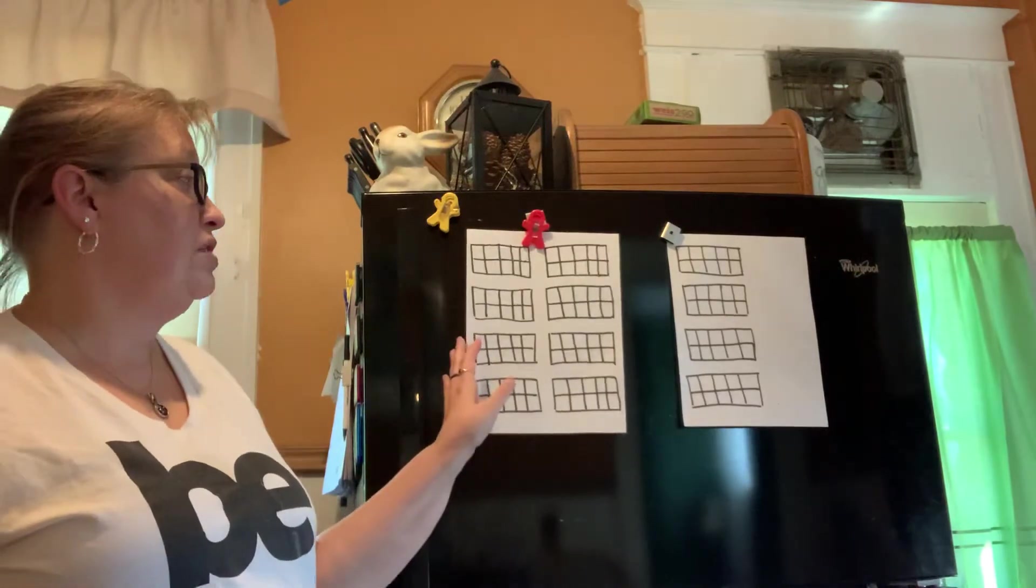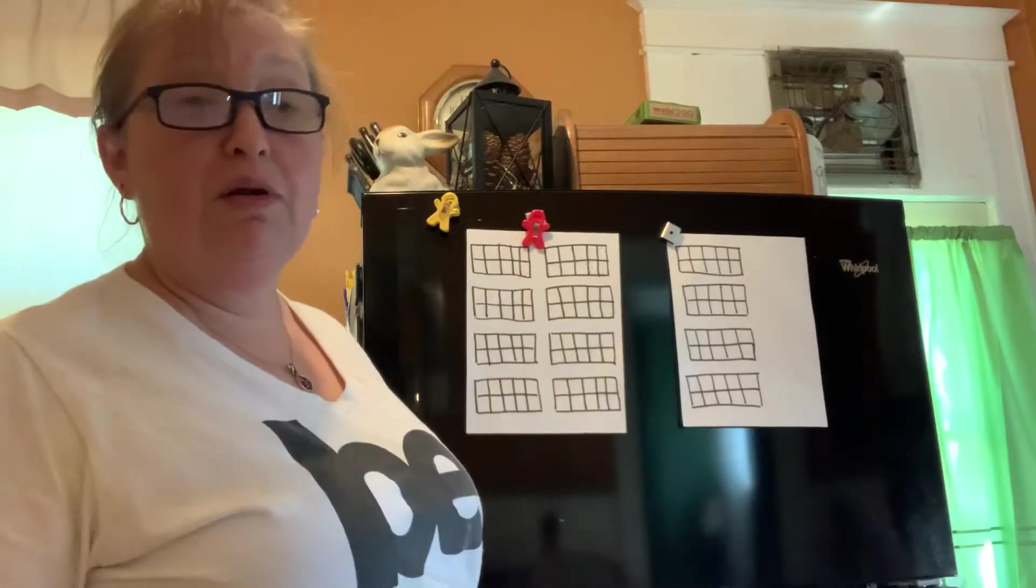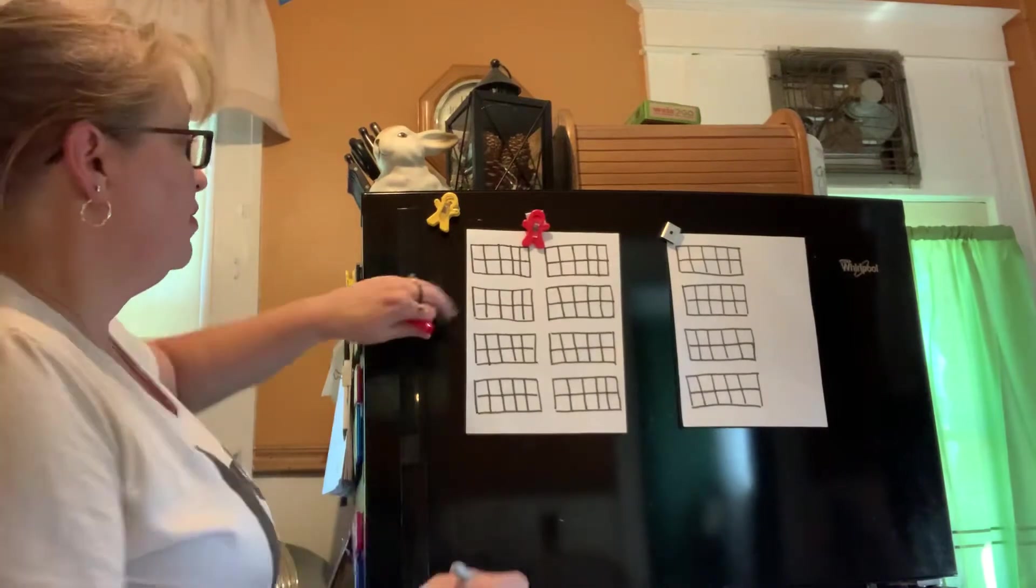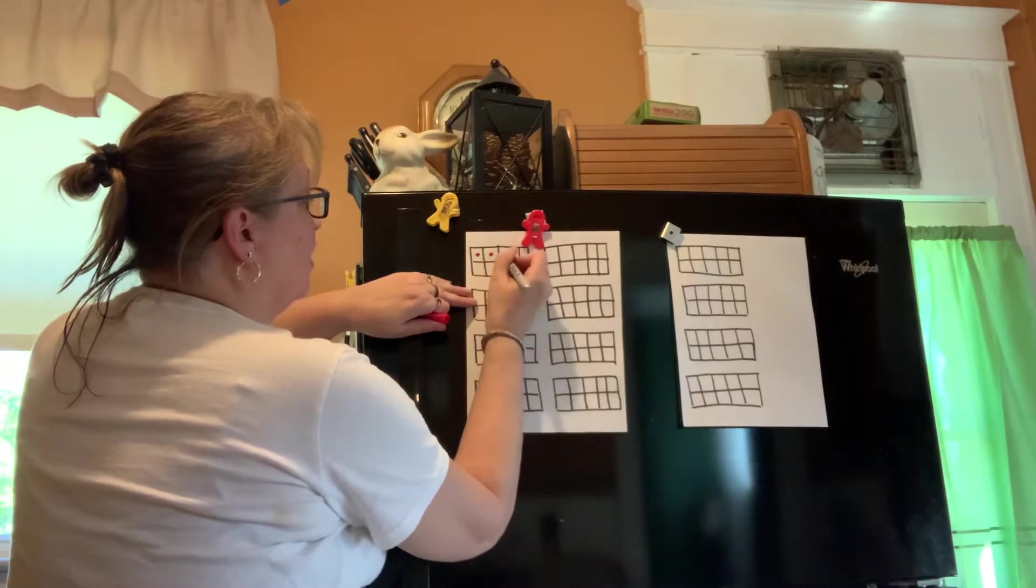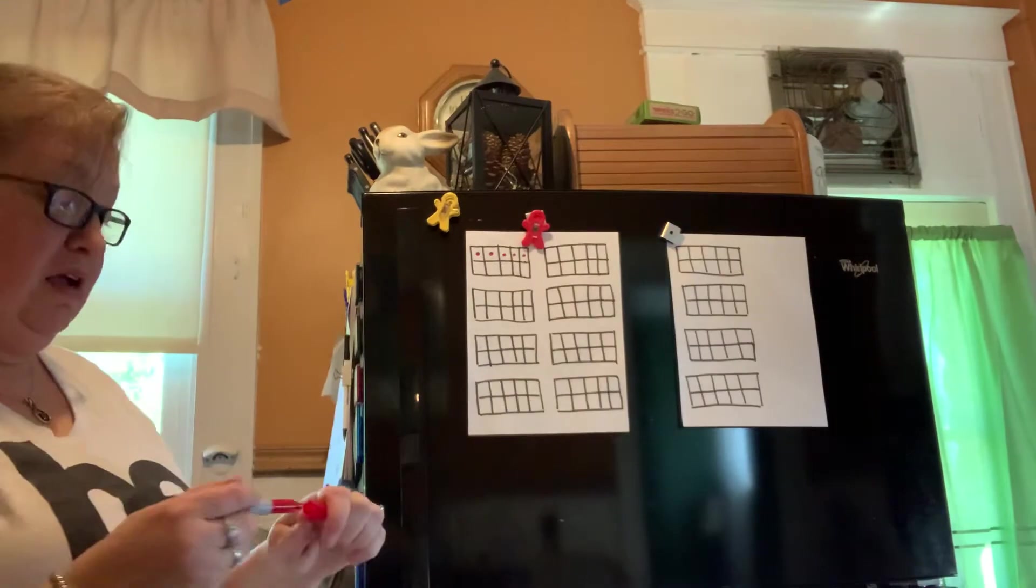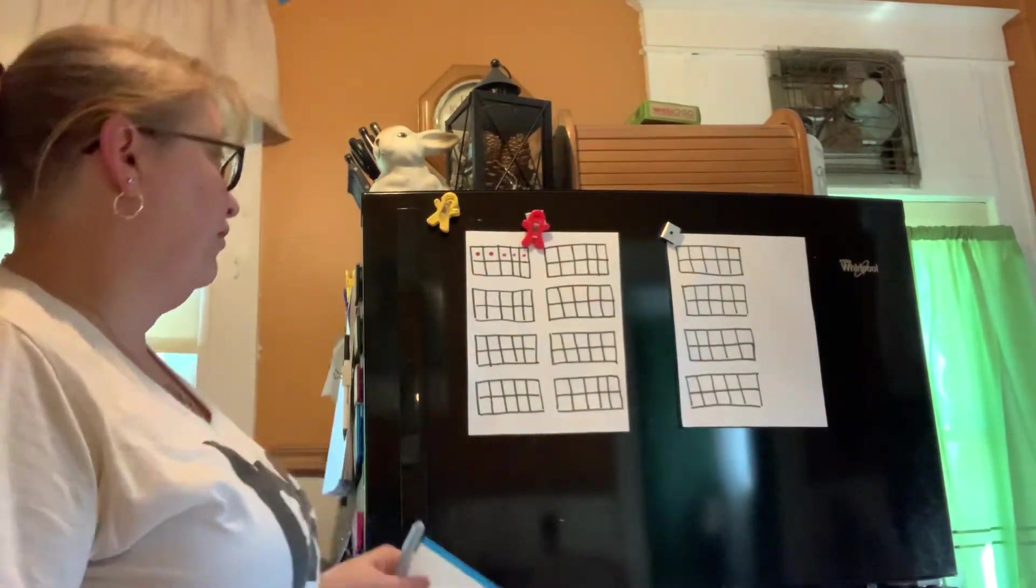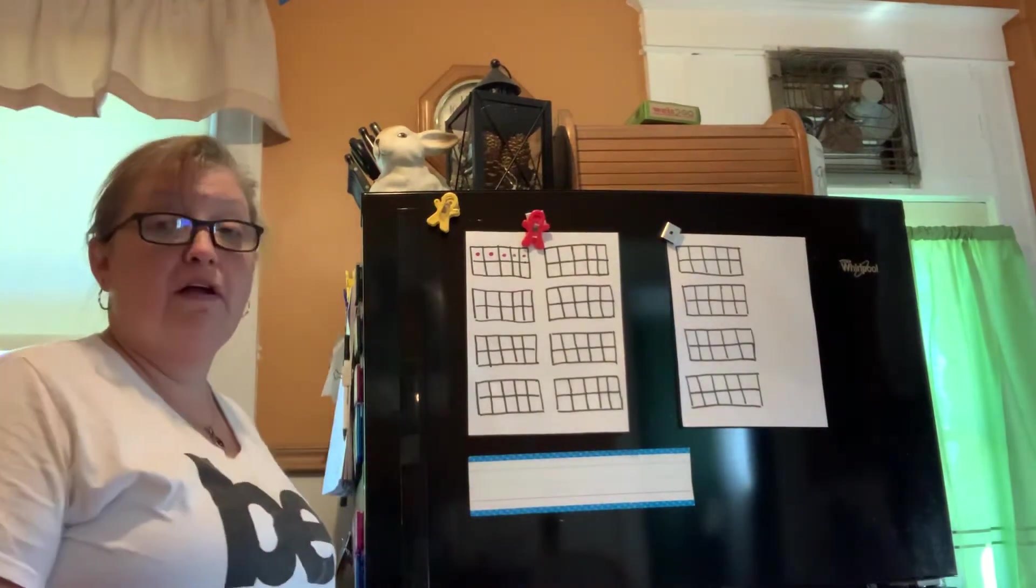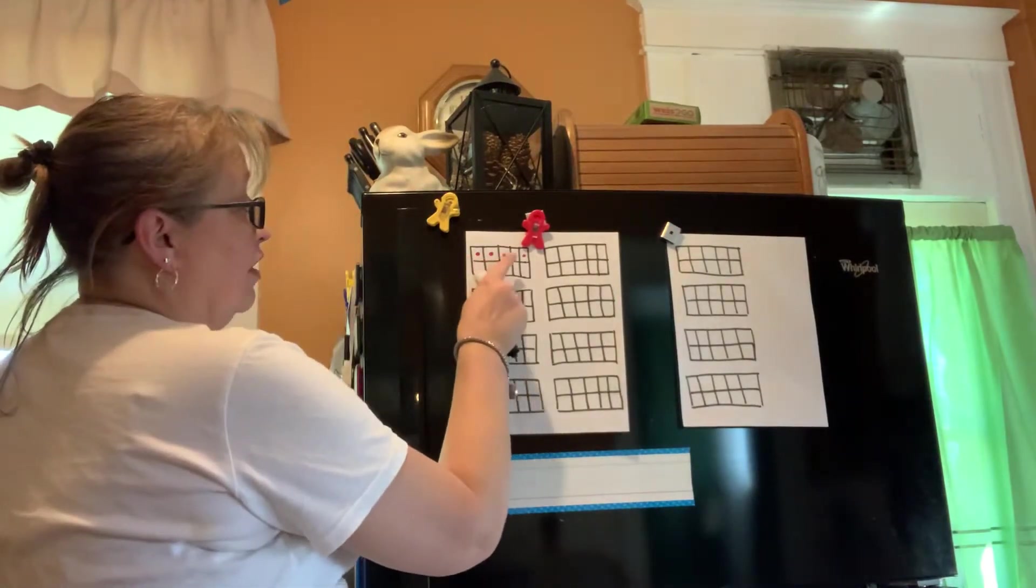So what we're going to do today is we are going to do some counting on our 10 frames and then you're going to be able to work in your learning packet to do some more. So I put some dots and if you have a piece of paper, you could do this with me or on a board. And I filled up just the top of my 10 frame. How many would I have? I would have five. And if I wanted to make sure I could count them. One, two, three, four, five.